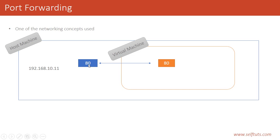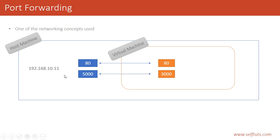The same ports can be port forwarded, but we can also have a link between different ports. For example, port 5000 in our host machine can be linked to port 3000 in our virtual machine. So if any user visits 192.168.10.11:5000, it means they are visiting port 3000 of the virtual machine.